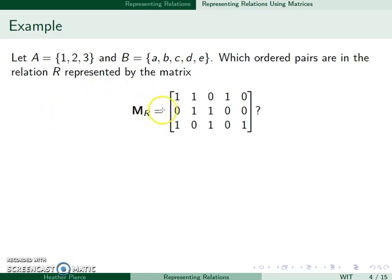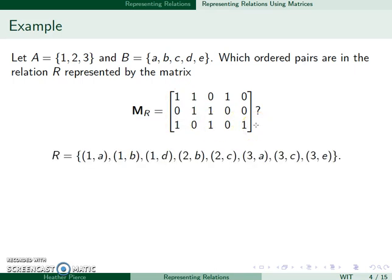Let's find the ordered pairs given here. A goes down the side, B goes across the top. So I have the point 1A, 1B, 1D, 2B, 2C, 3A, 3C, and 3E, which are all given here.